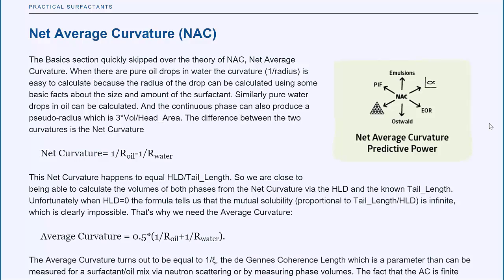Very briefly, Net Curvature is very easy to understand. You have some oil drops and you have some water drops, and the curvature is 1 over the radius of the oil minus 1 over the radius of the water. It's the balance of the two curvatures. And this Net Curvature happens to equal HLD over the length of the tail.